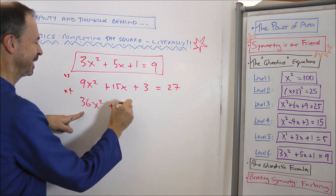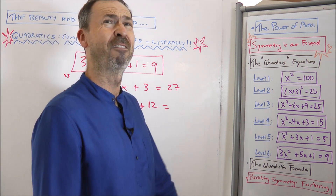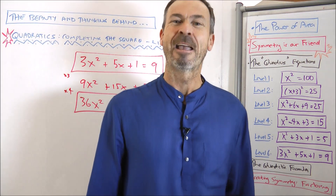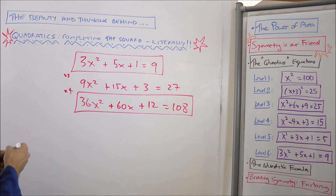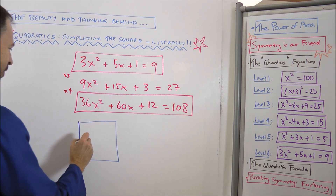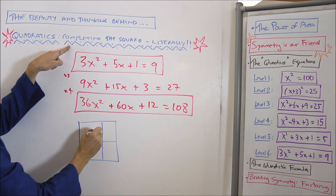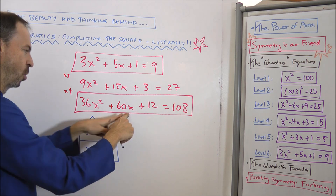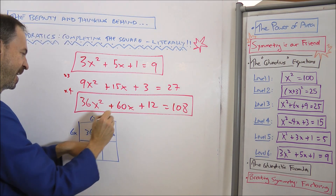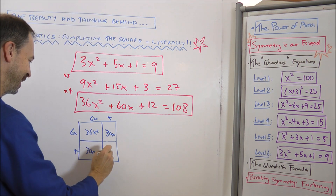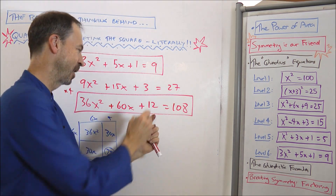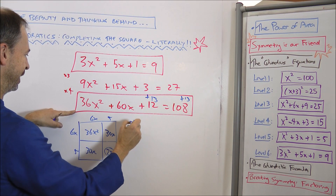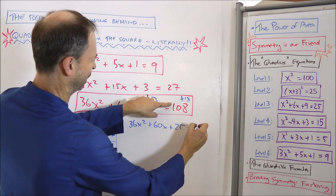So that'll be 36x squared plus 60x plus 12 equals 108. I know this seems absurd with such huge numbers, but it makes the picture very, very nice. Completing the square: 36x squared comes from 6x and 6x. 60x — keep it symmetrical — 30x and 30x. Something times 6x makes 30x — 5. 5 times 5 means the missing piece is 25. I don't have 25, so I'll add 13 to make it 25. So now my equation is really 36x squared plus 60x plus 25 equals 121.